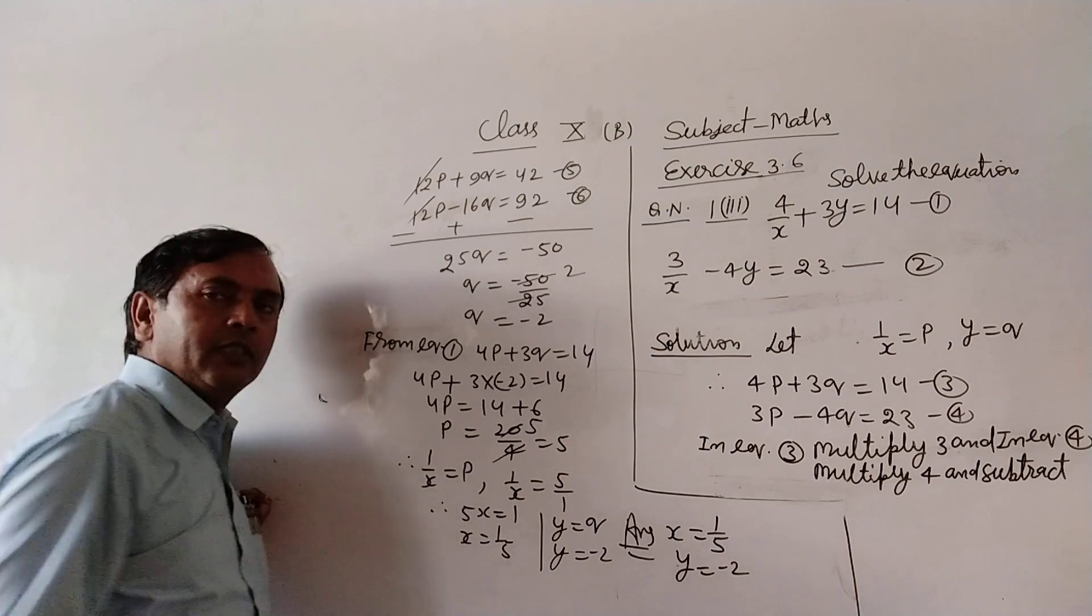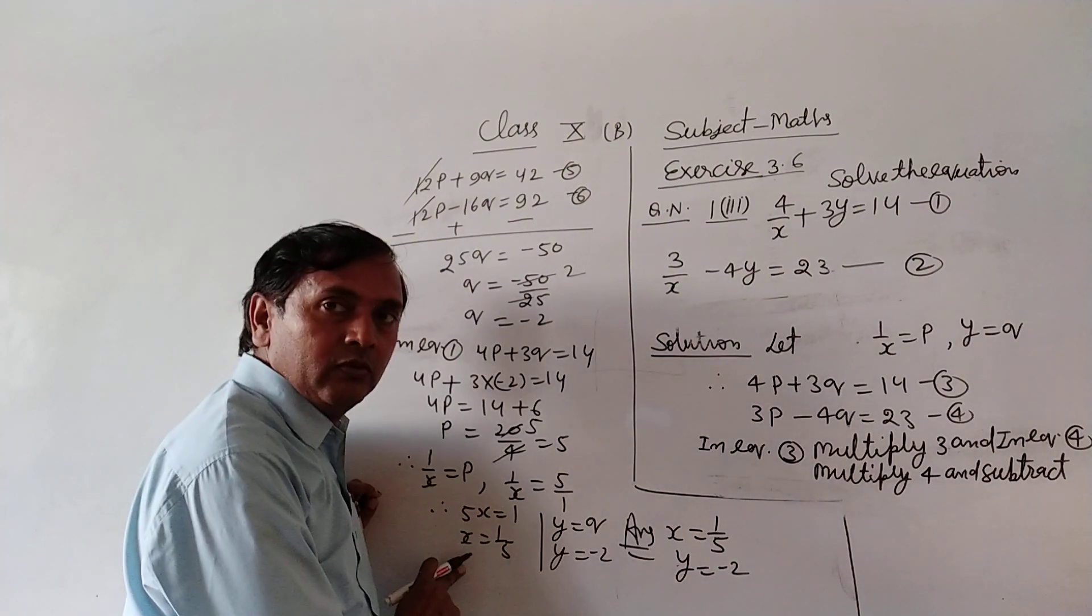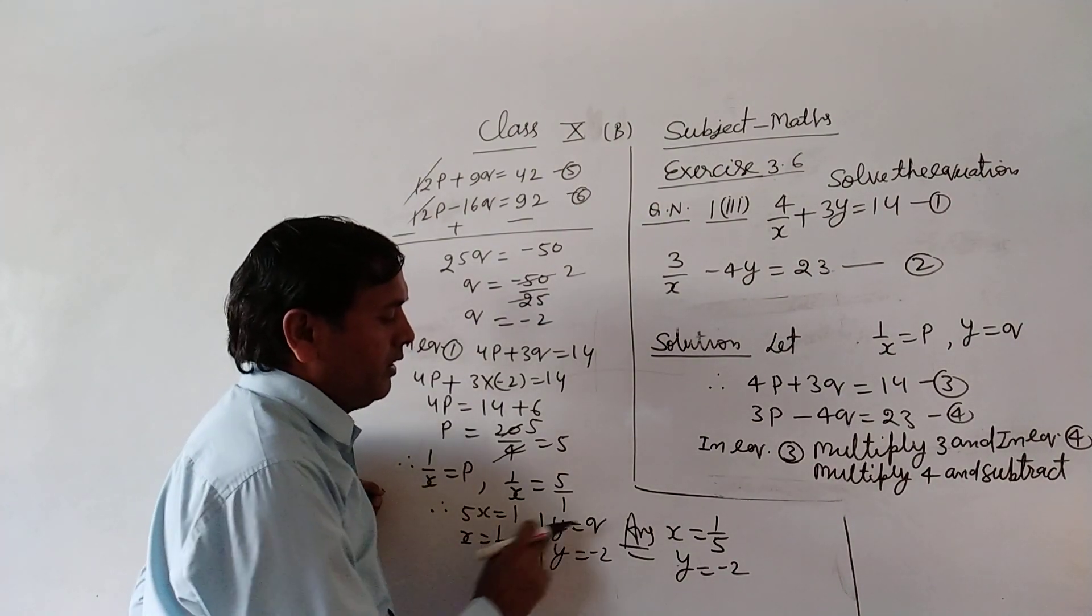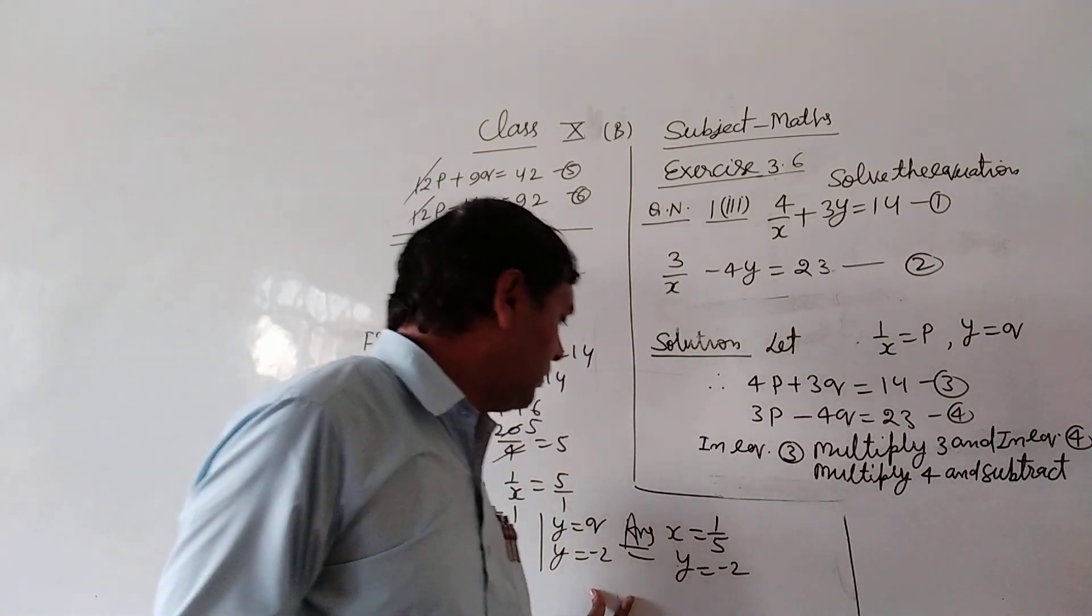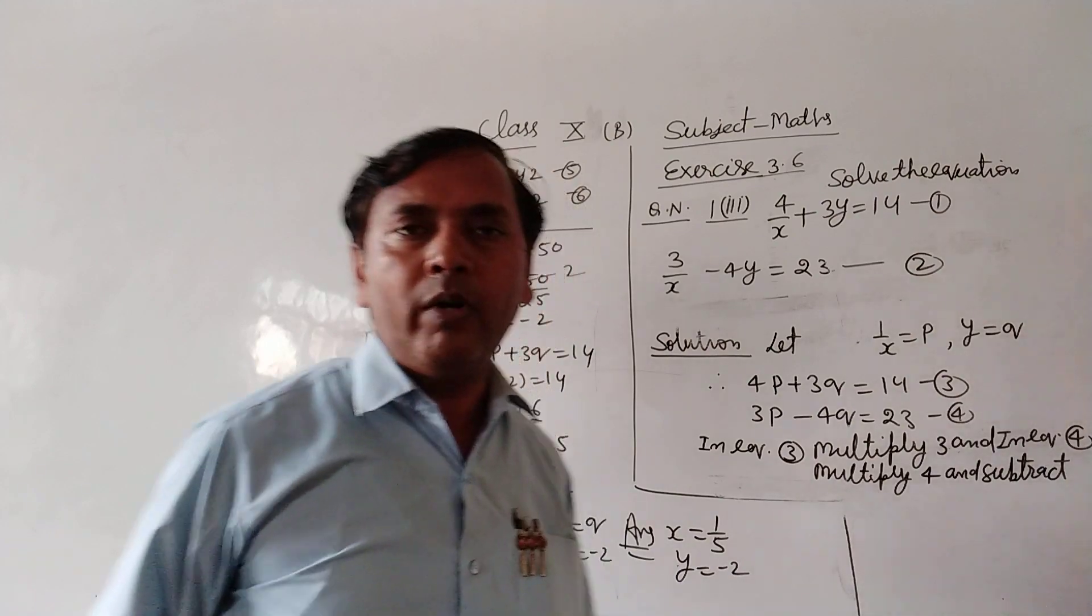So 5/1, cross multiply: 5x equals 1. So x equals 1/5. And y equals q, so y equals minus 2. So the answer: x equals 1/5, y equals minus 2.